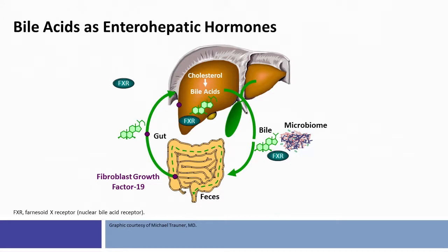Bile acids are secreted into bile and also potentially interact through FXR via the microbiome. Bile acids are reabsorbed as enterohepatic hormones through the enterohepatic circulation in the terminal ileum, where FGF19 via FXR agonism can also play a role as an endocrine hormone in regulating liver metabolism, and has many pleiotropic effects on inflammation, fibrogenesis, and choleretic pathways.